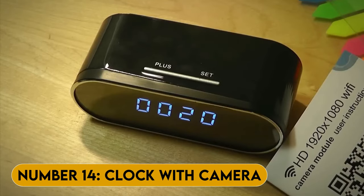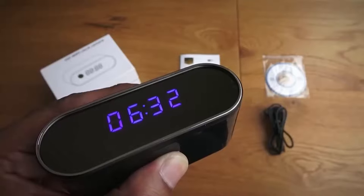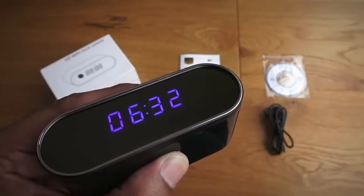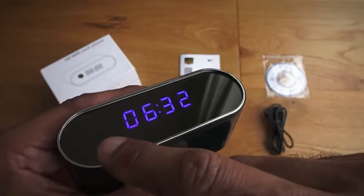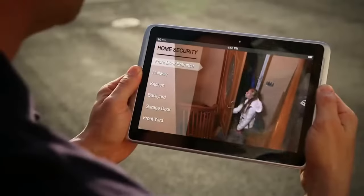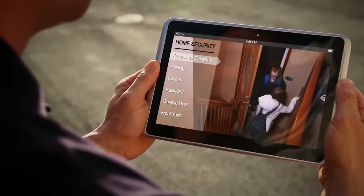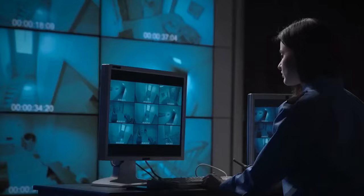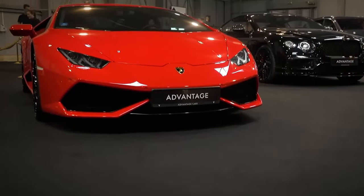Number 14. Clock with camera. Before you start thinking, why do I need a clock with a camera, let me ask you this. Have you ever wanted to know what goes on in your room when you're not there? Maybe you've got a roommate who's always taking your snacks, or a sneaky pet that likes to nap on your bed when you're not at home. With a clock that has a camera, you can see exactly what's happening in your room at all times.